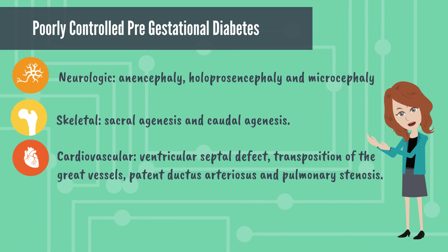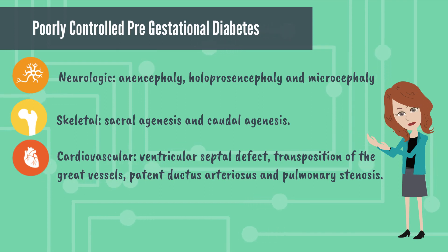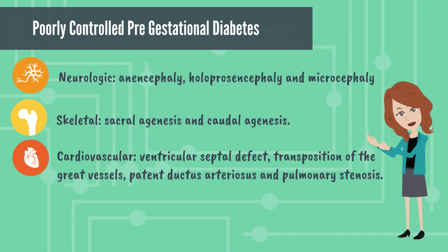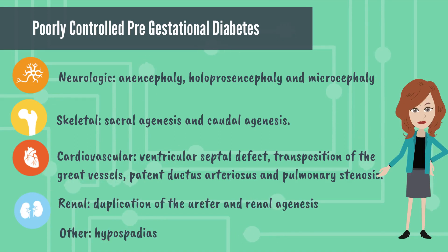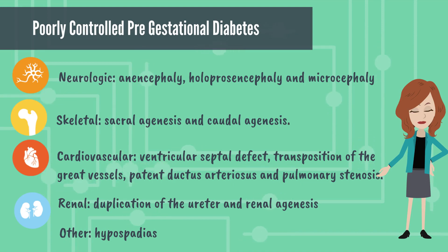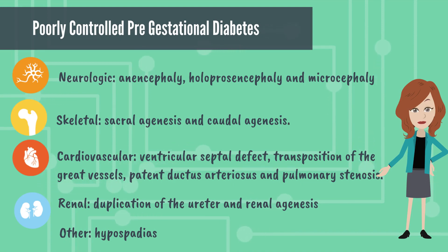Cardiovascular abnormalities include ventricular septal defect, transposition of the great vessels, patent ductus arteriosus, and pulmonary stenosis. Renal abnormalities include duplication of the urinary system and renal agenesis. In some cases, hypospadias can also be seen.